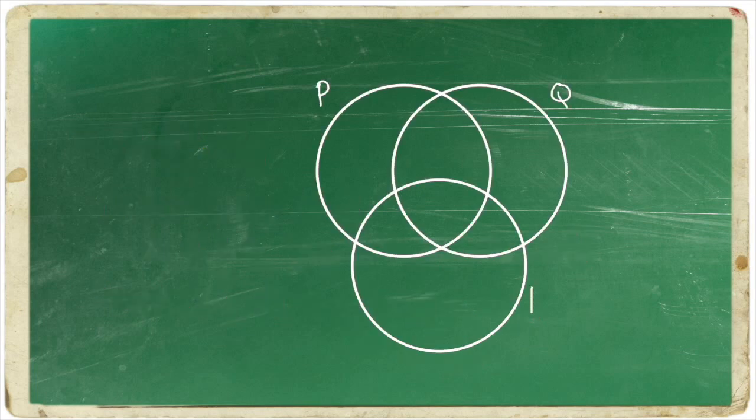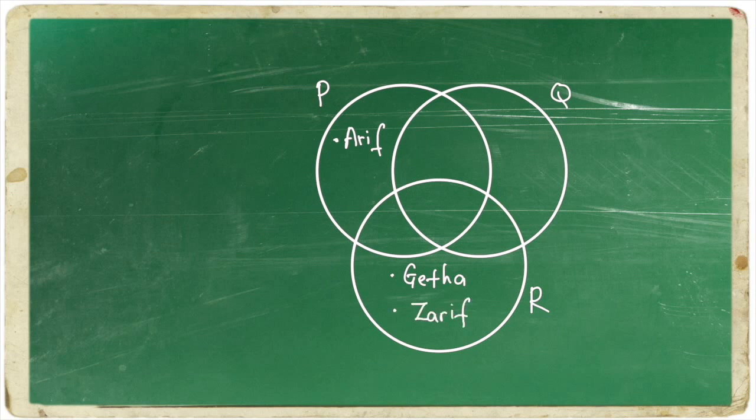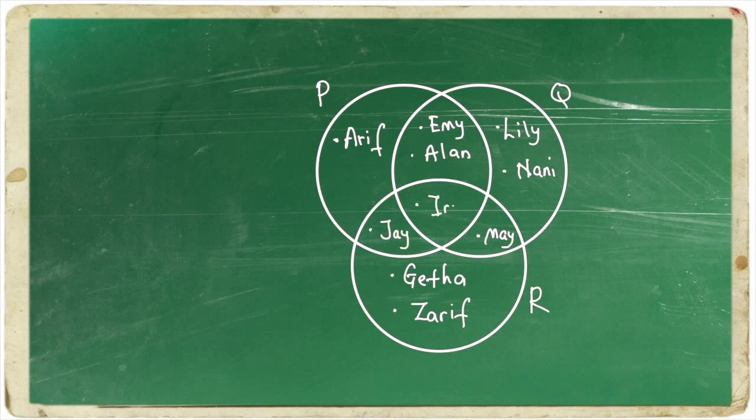Now, let's see how to draw a Venn diagram and how to share the region. First, we draw three circles that represent three activities. We have P, Q and R. Next, we list down all the elements inside as follows. Next, we label each section of the Venn diagram with a number. For the example, we have number 1 until 7.